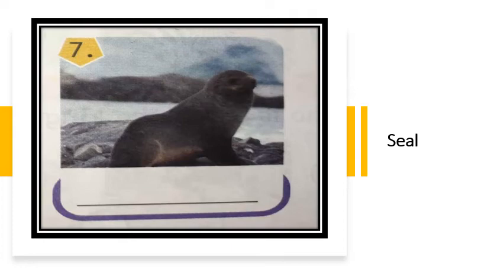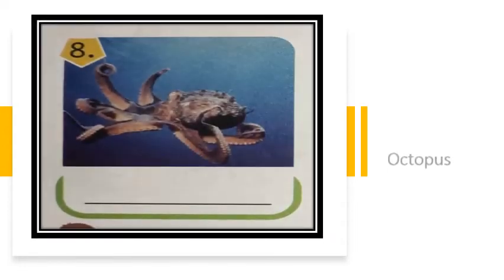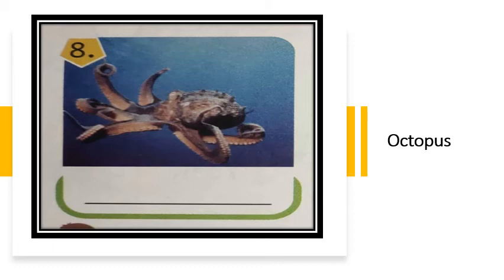Now let us see what comes at number eight, and number eight is Octopus. O-C-T-O-P-U-S. Octopus. Octopus is an animal which lives in water and has eight legs. This is the picture of an octopus.